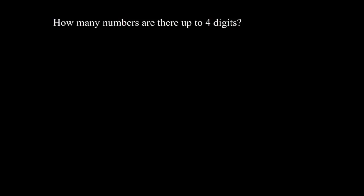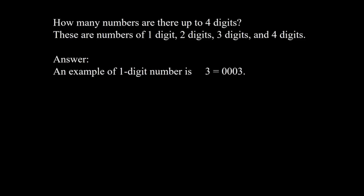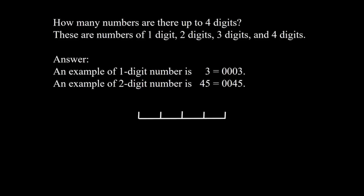Example 1: How many numbers are there up to 4 digits? These are numbers of 1, 2, 3, and 4 digits. A 1-digit number like 3 is the same as 0003, and a 2-digit number like 45 is the same as 0045, so we have 4 places. Since 1233 is not the same as 3213, order is important. Since digit 3 is repeated, repetition is allowed. This is an arrangement problem.